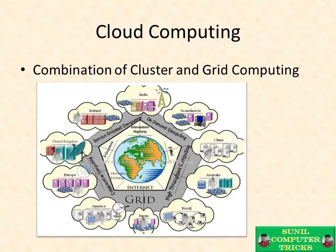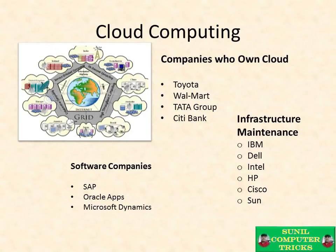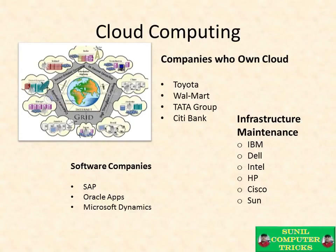Companies with worldwide existence — like Toyota, Walmart, or Citibank — have such infrastructure at their core. This grid of clusters forms their own cloud. Their infrastructure consists of hundreds or thousands of servers that create a network across every city and country. All these servers work as one system. The software that runs on such infrastructure — provided by companies like SAP, Oracle Labs, and Microsoft Dynamics — supports these businesses.